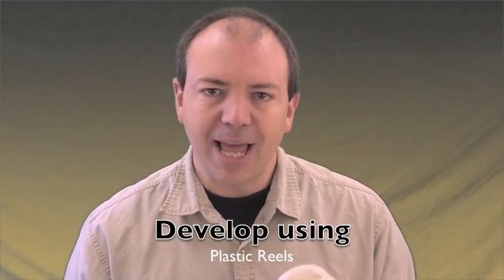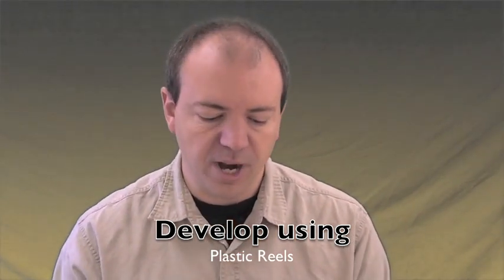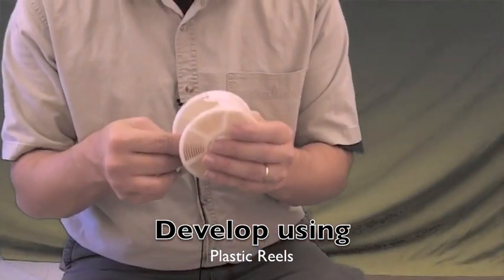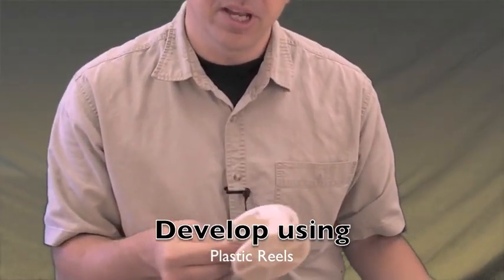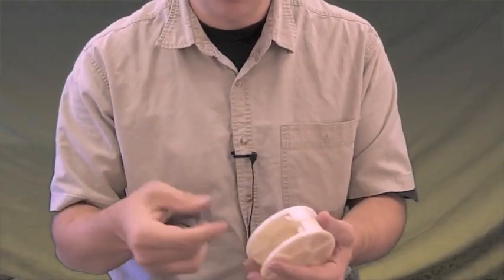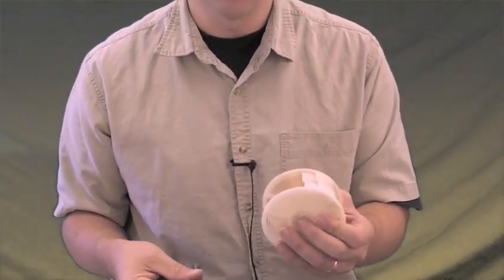Today we're going to develop black and white film using plastic reels. Before, you got to see how a metal reel works and I want to see the contrast of how a plastic reel works. If you are in my dark room, you'll hear the word cheaters, mainly because plastic reels are a lot easier to use than metal reels.